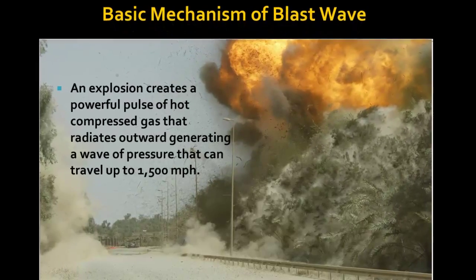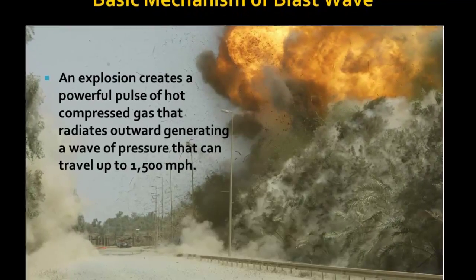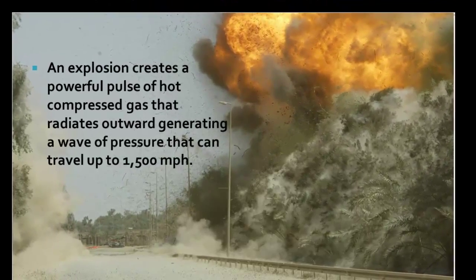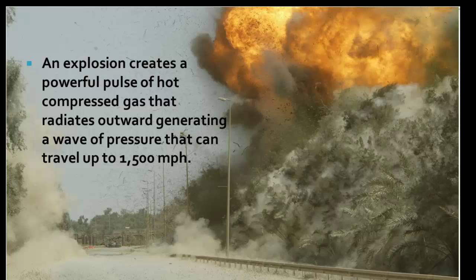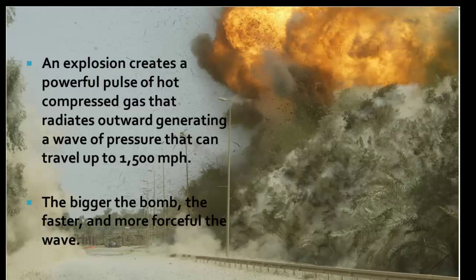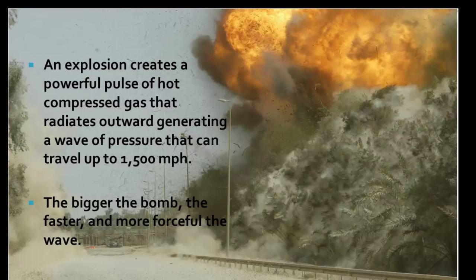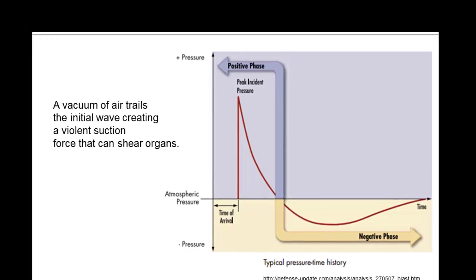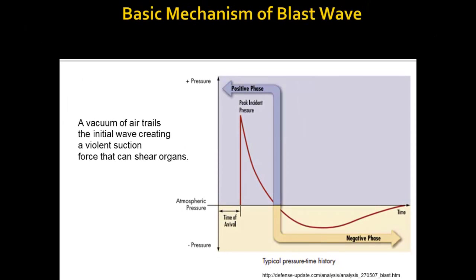An explosion creates a very powerful pulse of hot compressed gas that radiates outward, generating that wave of pressure that can travel up to 1,500 miles per hour. The bigger the bomb, the faster and more forceful the wave. A vacuum of air trails the initial wave, creating that violent sucking force or suction force that can shear internal organs.